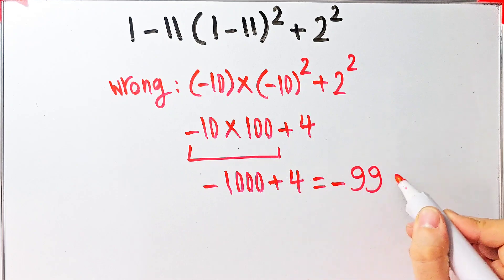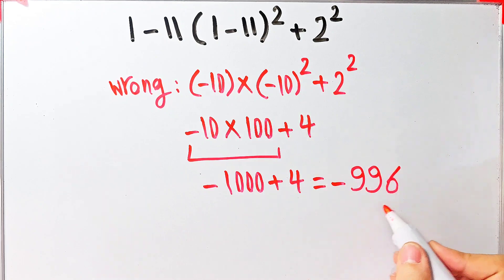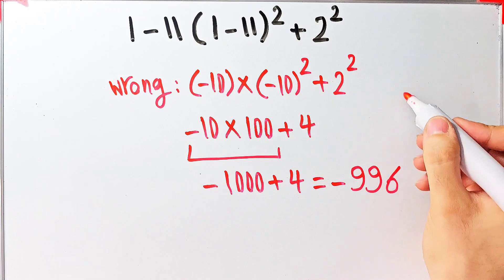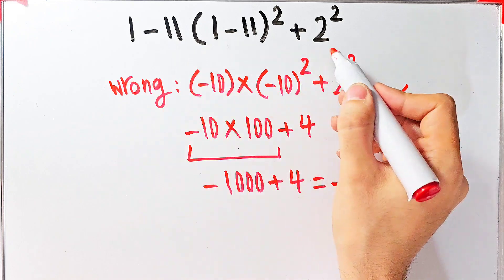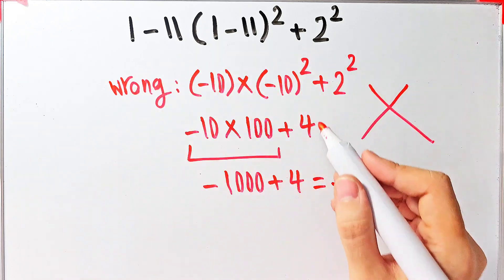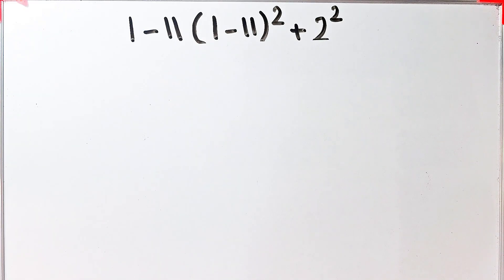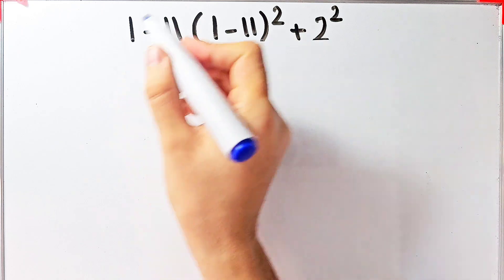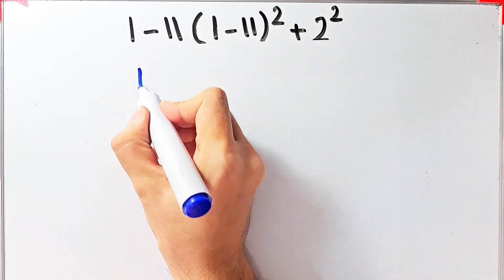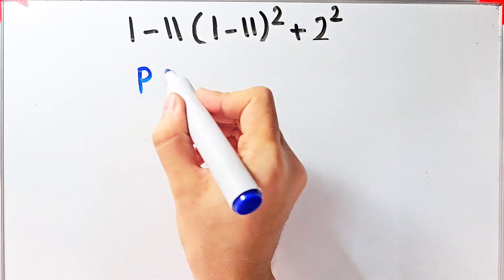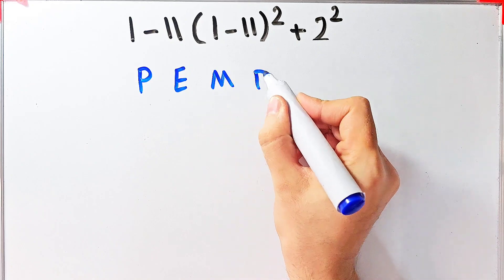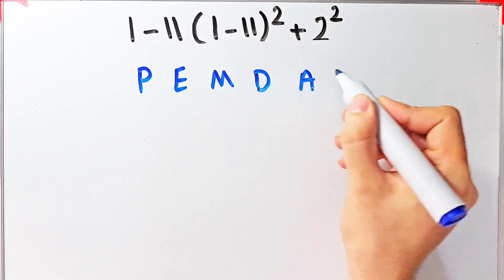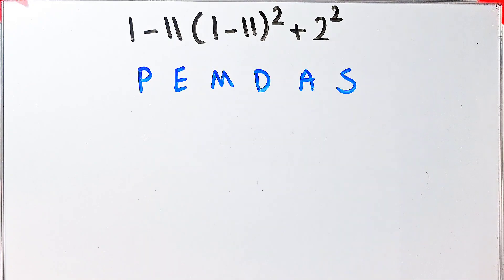They say the final answer equals negative 996, but this answer is definitely wrong. Let's solve this question step by step together. To solve this question we need to follow the PEMDAS rule. PEMDAS shows the priority of mathematical operations, and if you don't pay attention to this rule you get the wrong answer.